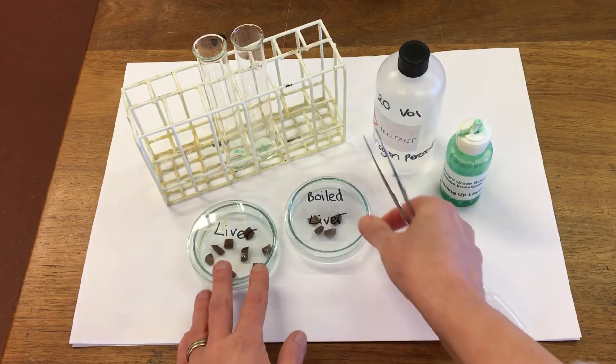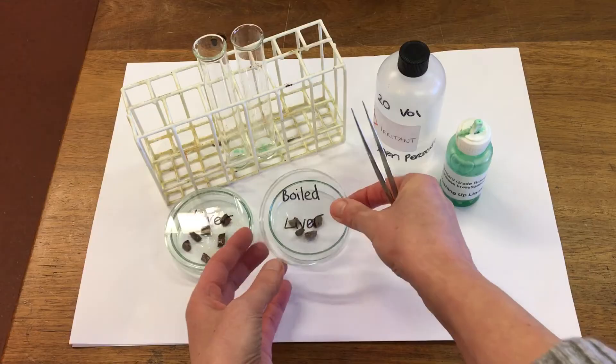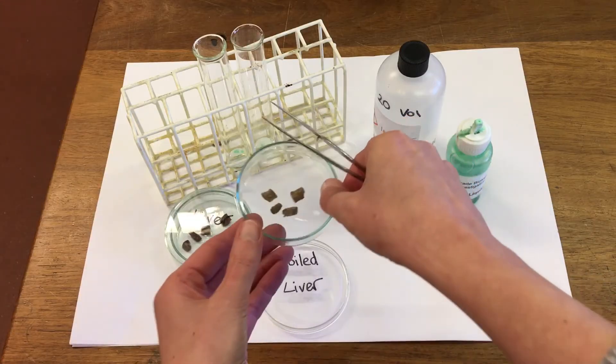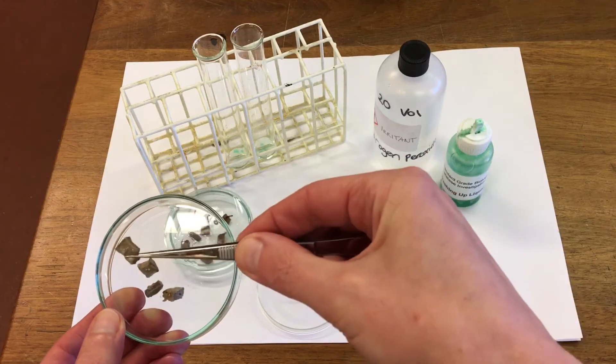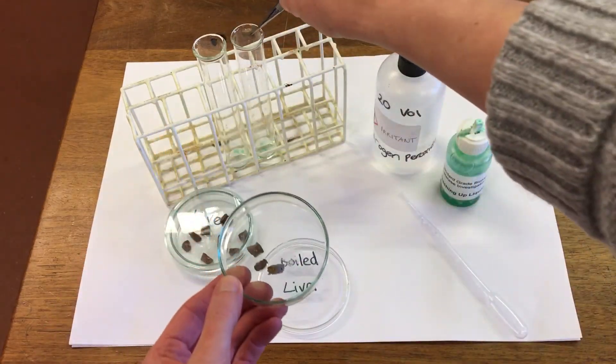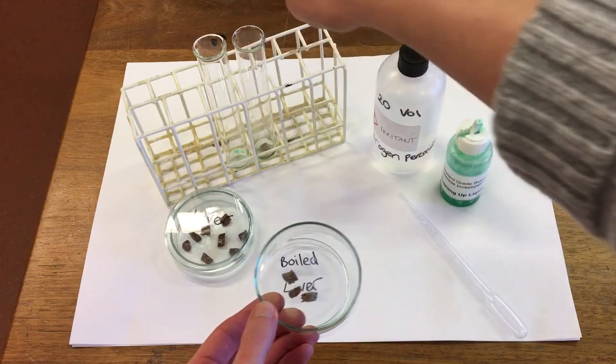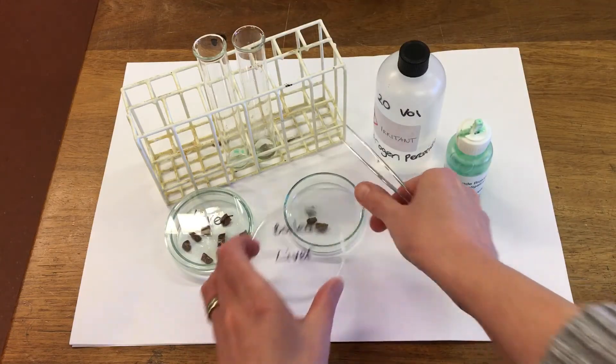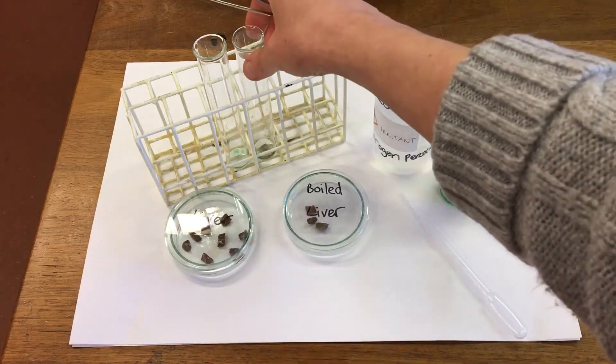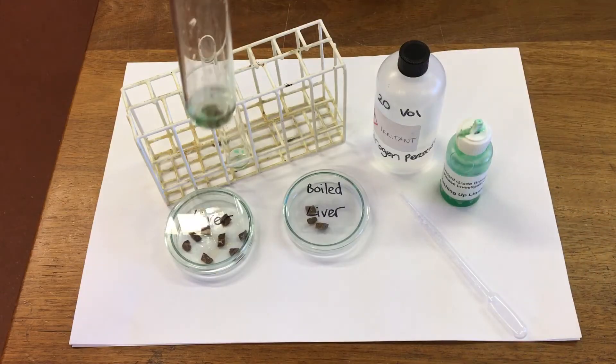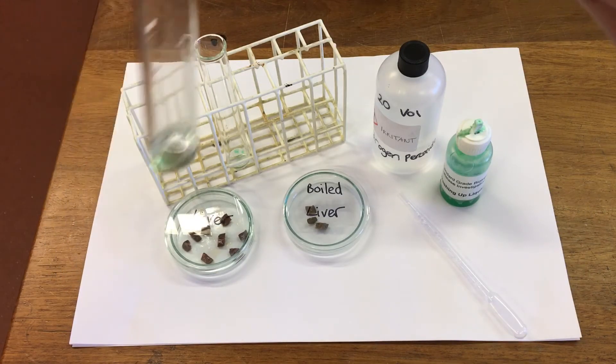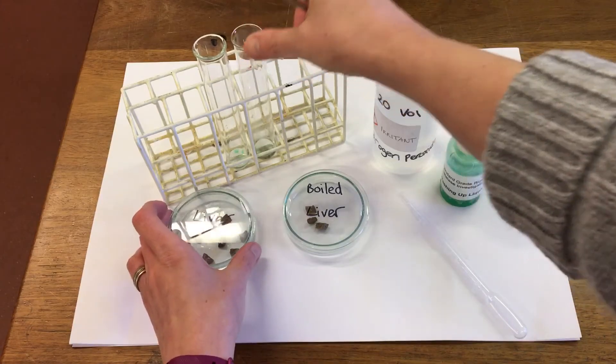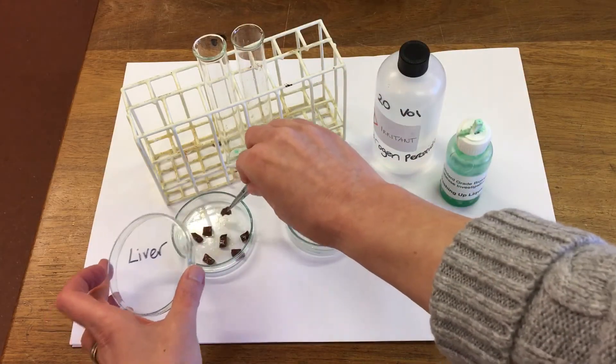And then we're going to try adding the liver. Now this one has been boiled at 60 degrees, so we're going to pop that in and then we're going to compare it to some fresh liver.